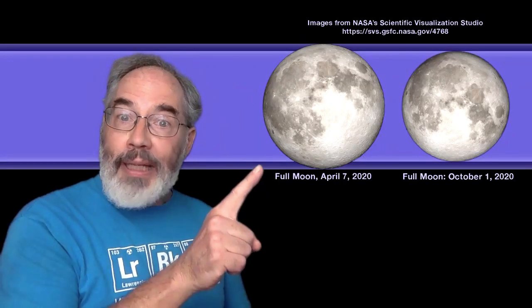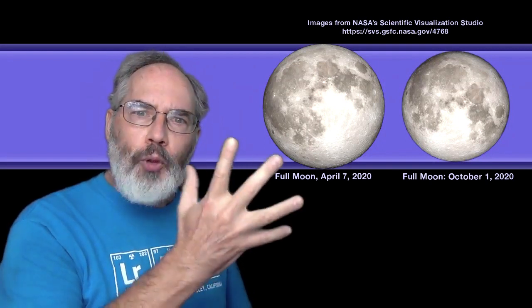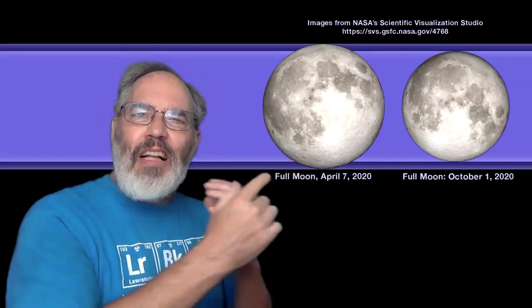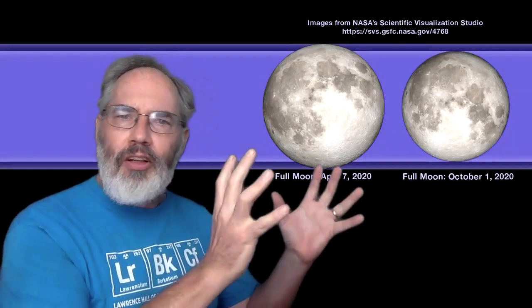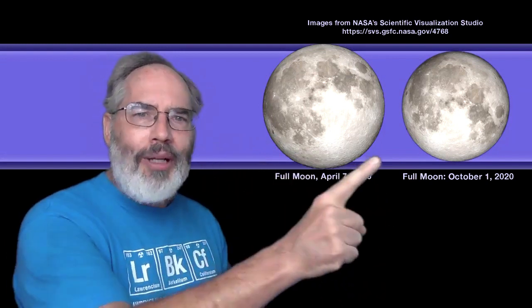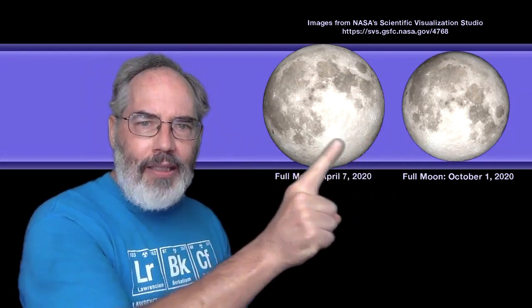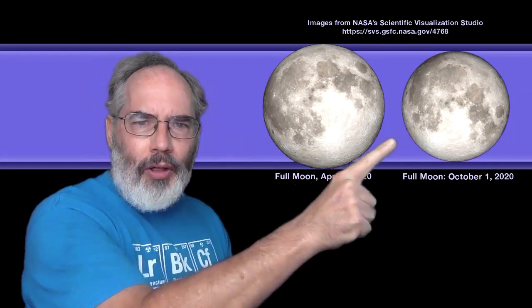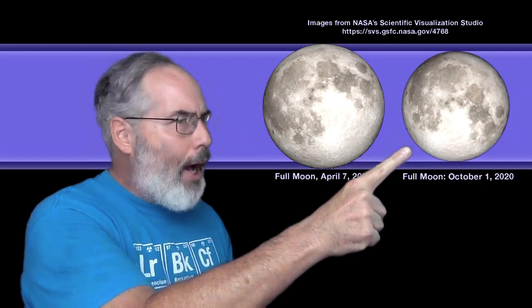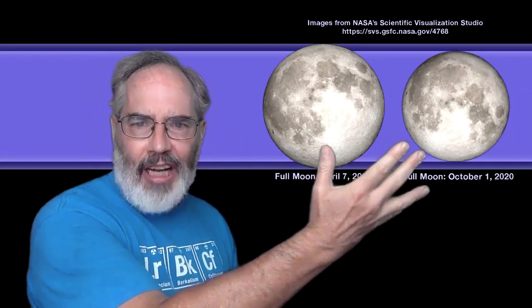The full moon we had near the beginning of spring this year was called a super moon because that moon happened when the moon was its closest in its orbit to earth, so it just looked a little bit bigger to us. This harvest moon in the fall is at a time when the moon is farthest from the earth, so it's looking its smallest to us. It's not a whole lot smaller than it looked in the springtime, but it's noticeably smaller. I've heard people call that a micro moon, which I think is a little bit of an overstatement since it's still pretty grand looking.